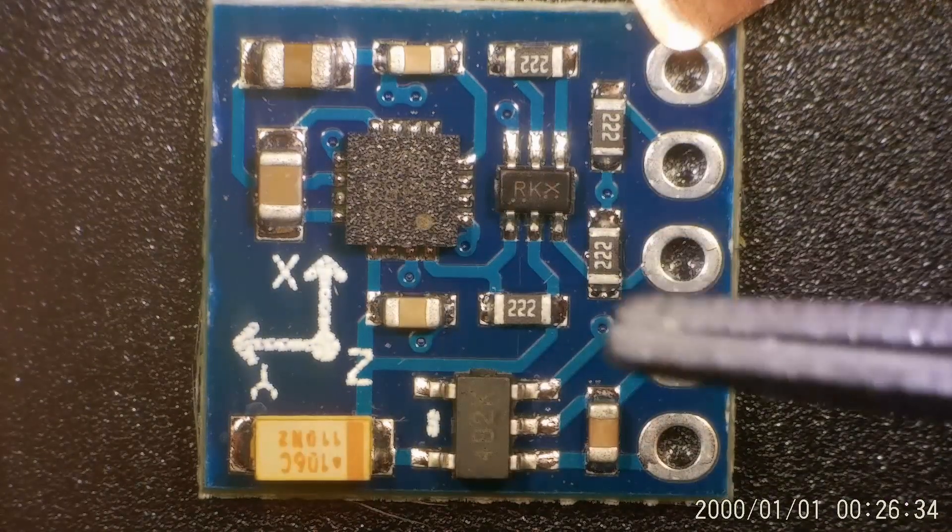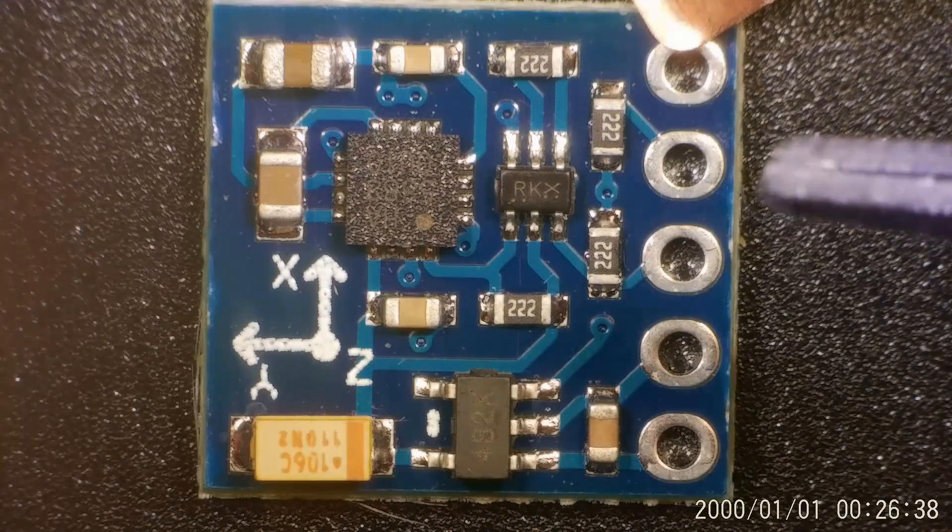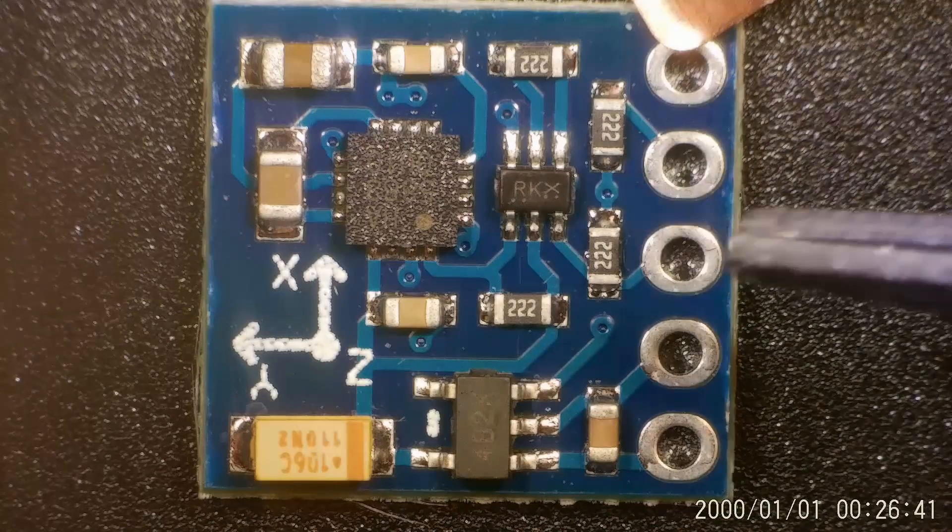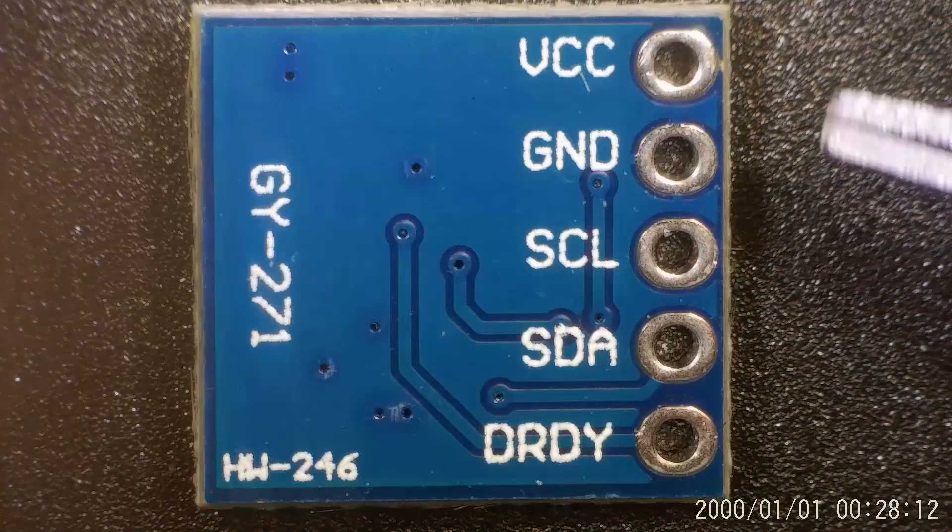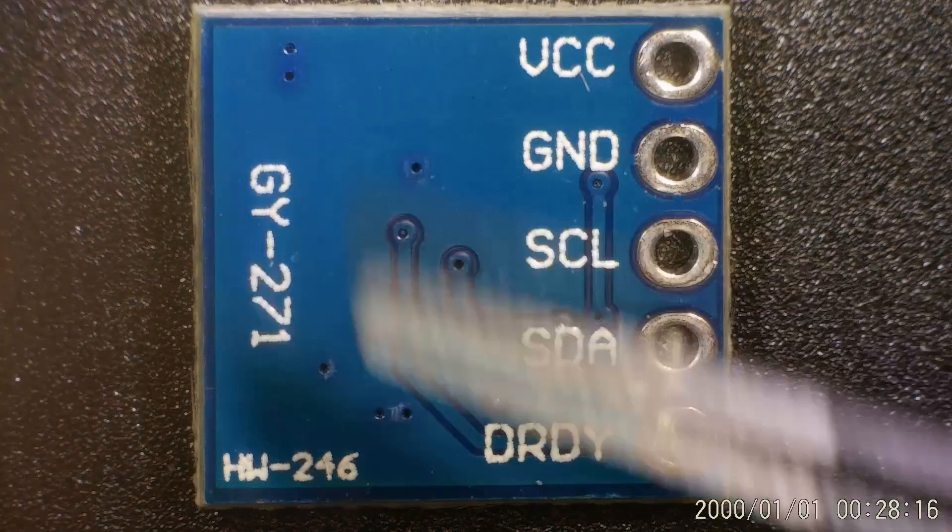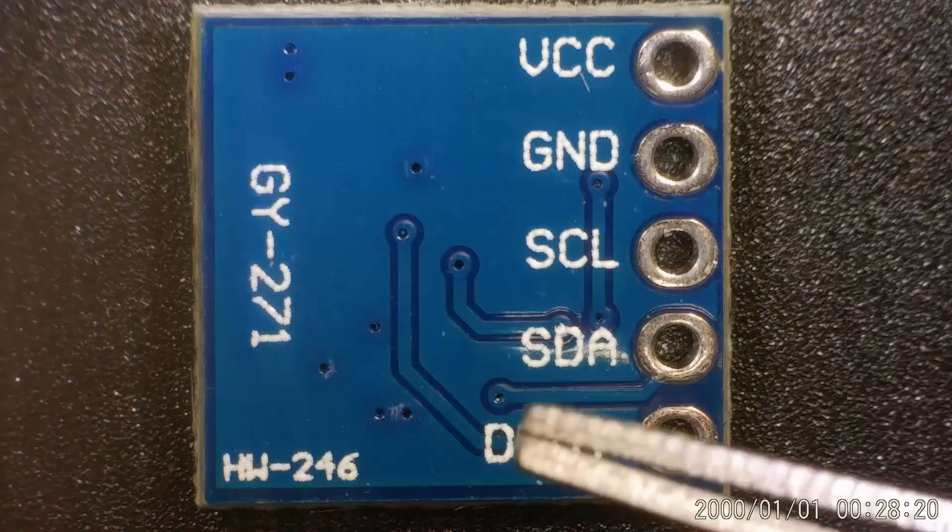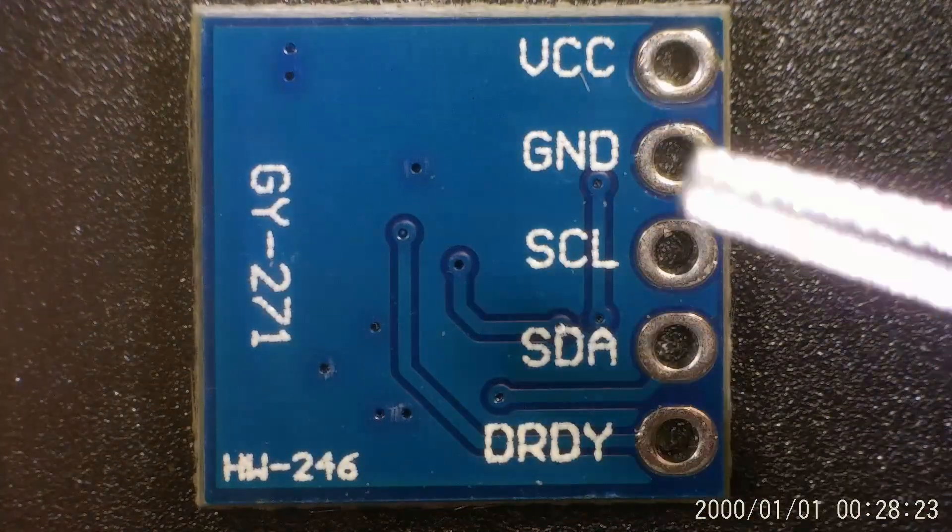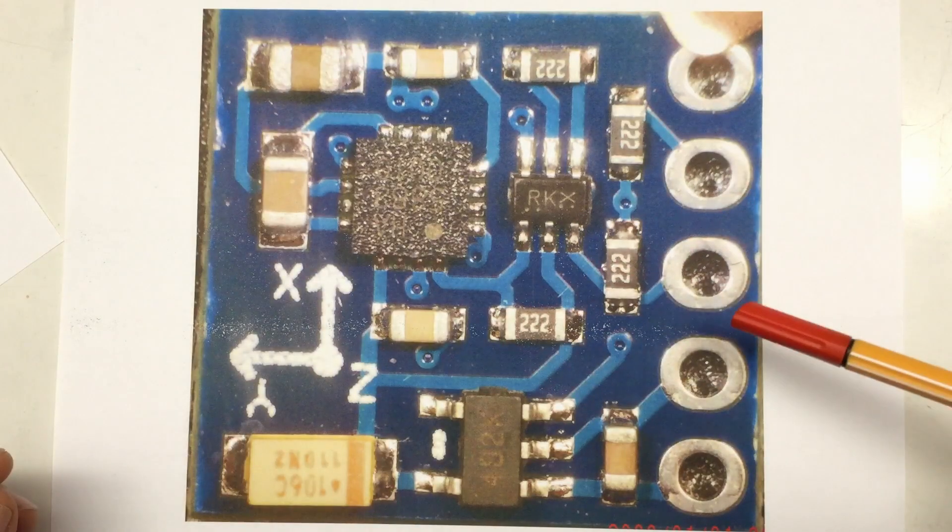I guess I'll make a photo of that thing, and then we do a little bit of reverse engineering. Here's the backside, and you see trace-wise, there's not much going on here. One, two, three, four traces. The rest is one big ground plane. So that shouldn't be too hard to reverse engineer.